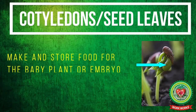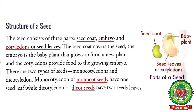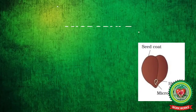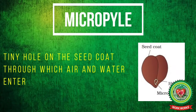The cotyledon or seed leaves make and store food for the baby plant or embryo. Students, along with these parts, seeds also have a micropyle — that is the tiny hole on the seed coat through which air and water enters.